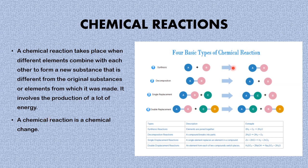If you look at this image right here, you can see that we are describing the four basic types of chemical reactions. There are others, but these four basic types are the ones that we are going to describe. Number one, we have synthesis reaction, in which elements are joined together. For example, we have hydrogen reacting with oxygen to give water.